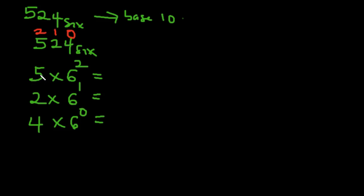So now I have 5 multiplied by—6 to the power of 2 is 6 times 6, which is 36. You will need a very good knowledge of your multiplication table to be able to do things in number bases successfully.